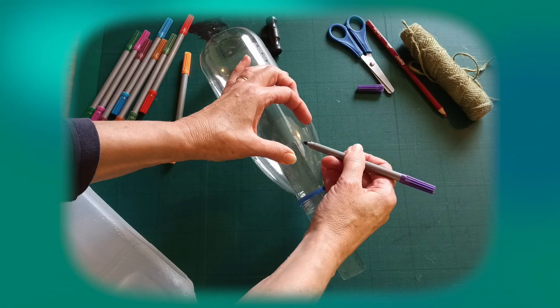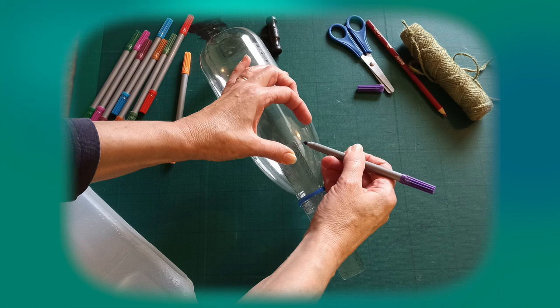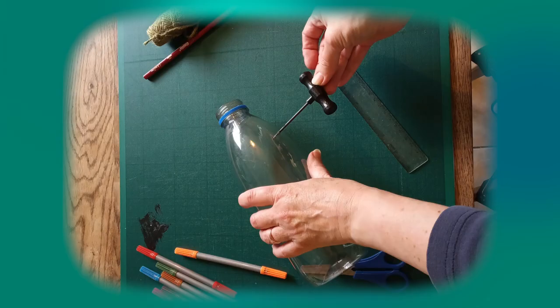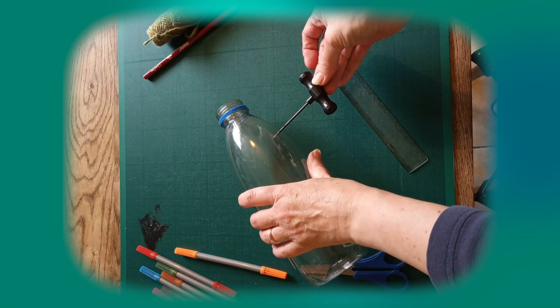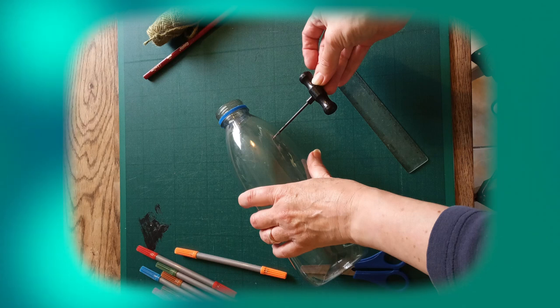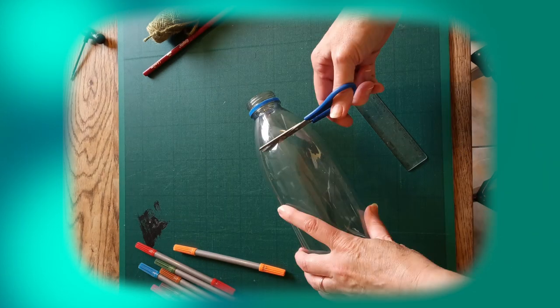So the first thing I'm going to do is cut the spout off the bottle. And to get the scissors started into the plastic, I used a little corkscrew. But you might need an adult to help you find something sharp just to get it started.